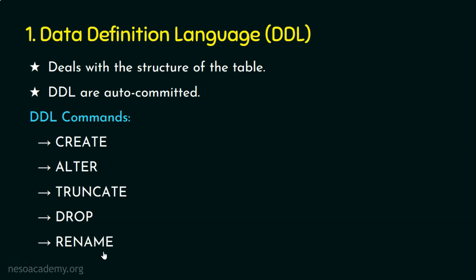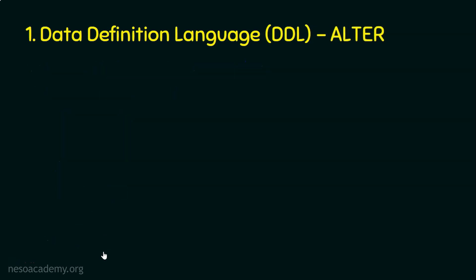We are now in Data Definition Language (DDL), and we know DDL contains CREATE, ALTER, TRUNCATE, DROP, and RENAME commands. In the previous lectures we saw elaborately how to create a table without constraints and with constraints, and we also covered various constraints. Now let's turn our attention towards the ALTER command, which deals with the structure of the table.